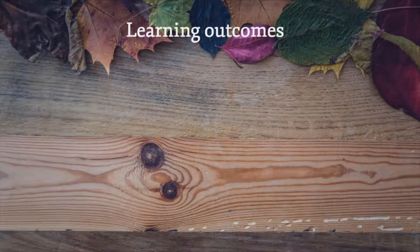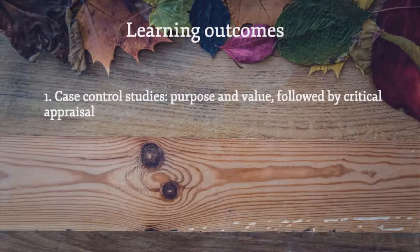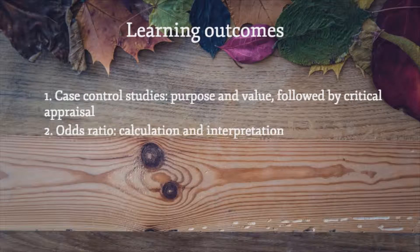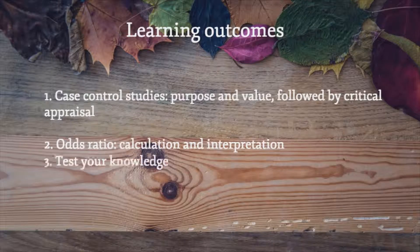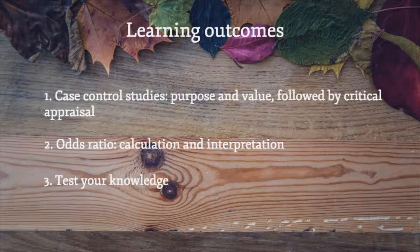For the learning outcomes for this module, first we will introduce you to the main features of the design of a case control study and discuss their benefits and value in healthcare. We will also introduce the measure of effect used to quantify findings in a case control study, namely the odds ratio, and discuss how to calculate and interpret an odds ratio. We want to get you thinking about those critical appraisal concepts relating to validity, trustworthiness of results, and value and relevance in the context of case control studies and how they might be applied in practice using an open access example of a case control study.